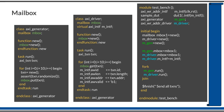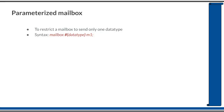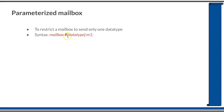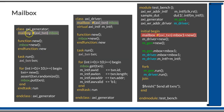Now we will learn more about mailbox. By default, a mailbox is typeless — you can put an integer, a string, or anything into it. In most circumstances, you want to restrict the mailbox to carry only a specific data type. This is achieved by parameterizing the mailbox: passing a data type when declaring it. The syntax is mailbox #(data_type) m1. In the previous example, the mailbox should be parameterized with the axi_transaction type.